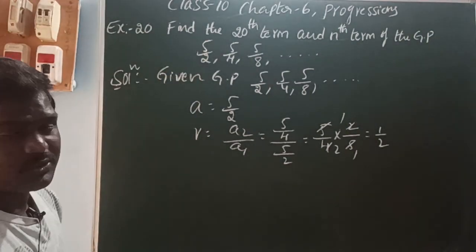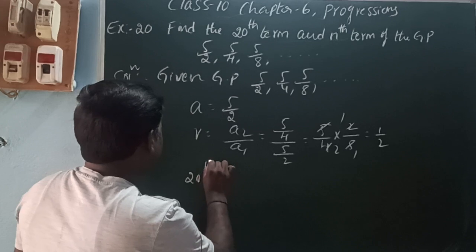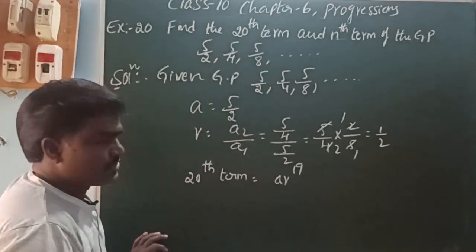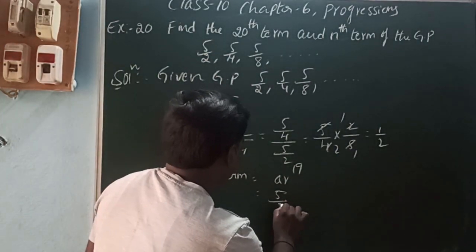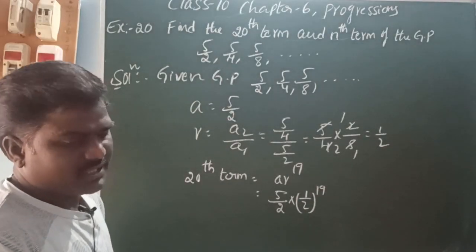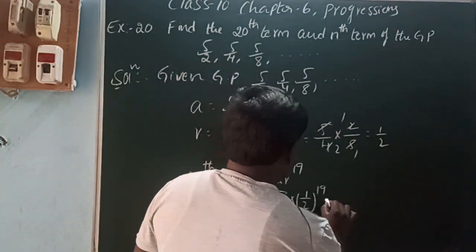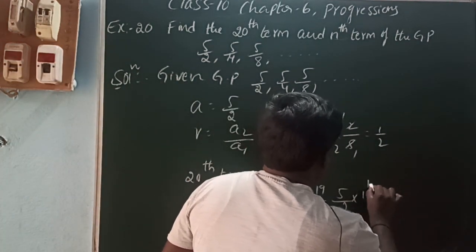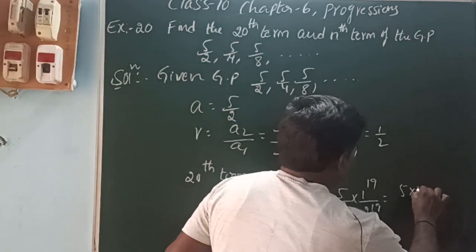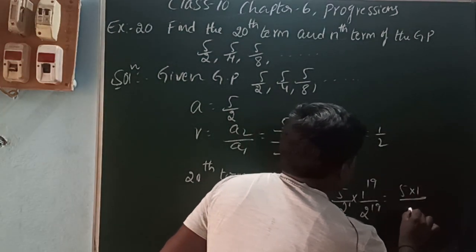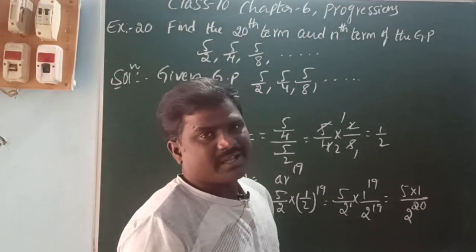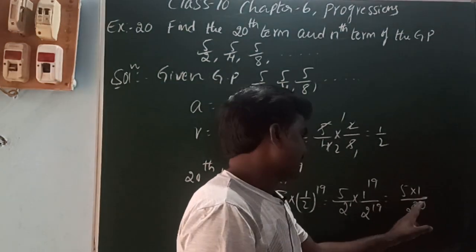So they ask us to find the 20th term. The general form of the 20th term in GP is a·r^19. That is equal to 5/2 into (1/2)^19. Using (a/b)^m = a^m / b^m, that is 5/2 into 1^19 / 2^19. Since 1^19 = 1, and 2^1 into 2^19 = 2^20 using a^m · a^n = a^(m+n), the 20th term is 5/2^20.